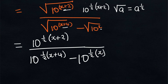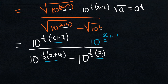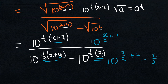We now simplify each exponent. One half multiplied by x gives x over 2, and one half multiplied by 2 gives 1, so the first term becomes 10 to the power of (x/2 + 1). For the denominator, one half times x is x over 2, and one half times 4 is 2, giving 10 to the power of (x/2 + 2). The last term becomes 10 to the power of (x/2).